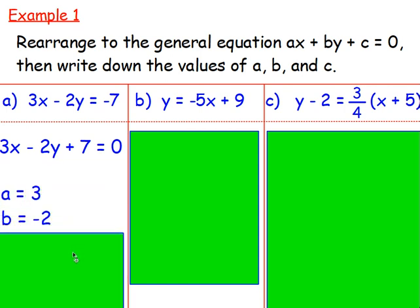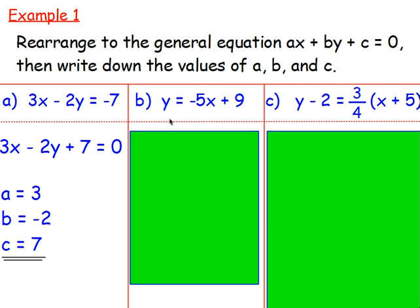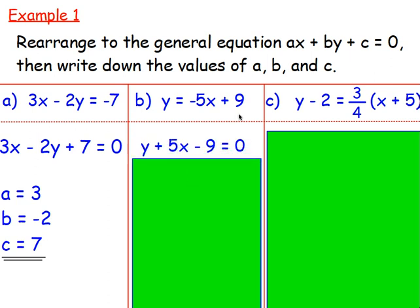Then we can write down the values of a, b, and c — just the coefficients of x and y and then the number on its own. For example b: y equals negative 5x plus 9. Again, the best way is to think — I want 0 on the right hand side. So move the negative 5x over, either add 5x to both sides or move it so it becomes plus. And also move the 9 — subtract 9 from both sides, or move it to get minus 9.